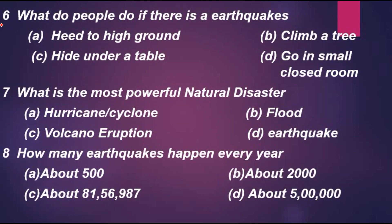Question 6: What do people do if there is an earthquake? Option A: head to high ground. Option B: climb a tree. Option C: hide under a table. Option D: go in a small closed room. The correct option is C, hide under a table.